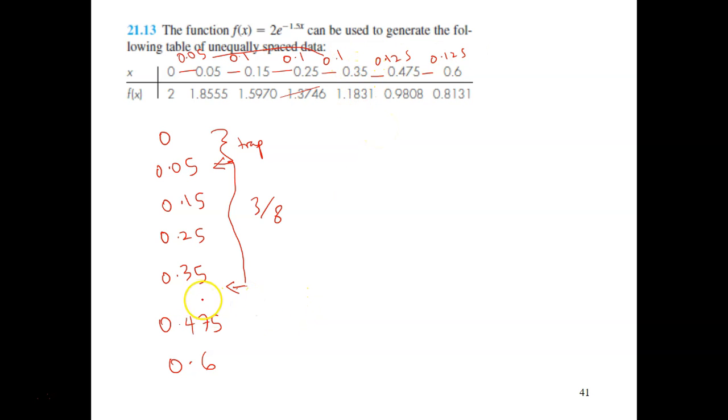which is 0.35, 0.475, and 0.6, which has the same step size. This is suitable for 1 over 8. Okay, I'm not going to show you how to solve this. I want you to try because it's simple. All you need to do is substitute all these values inside the formula. By solving all that, you will get the answer.